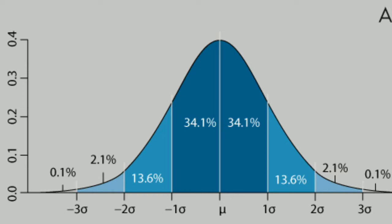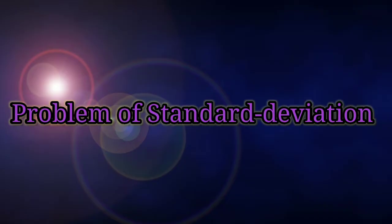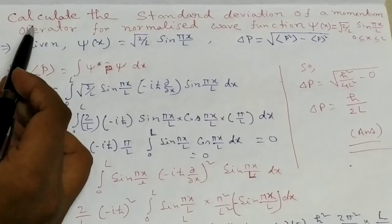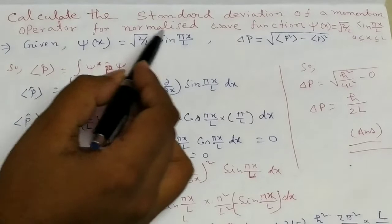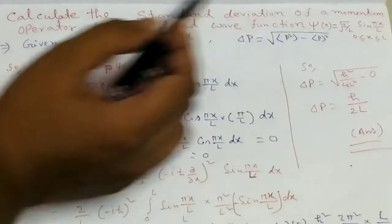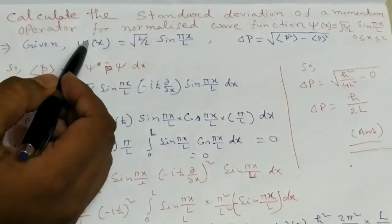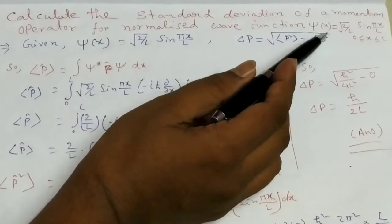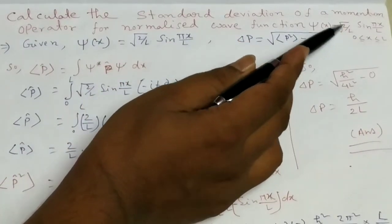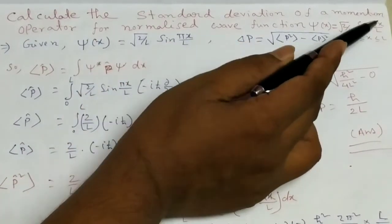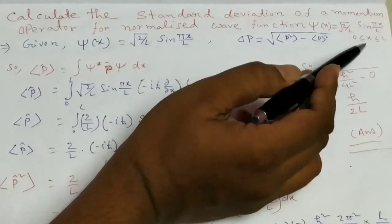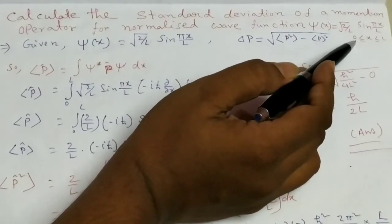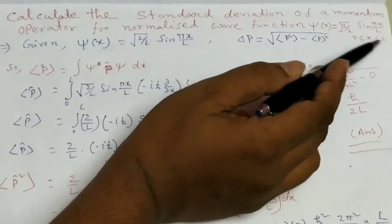Now we discuss one problem related to standard deviation. That is: calculate the standard deviation of the momentum operator for the normalized wave function psi equal to the square root of 2 over l times sine of pi x over l, where x is between 0 to l.